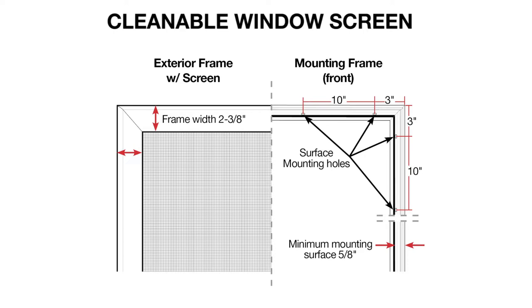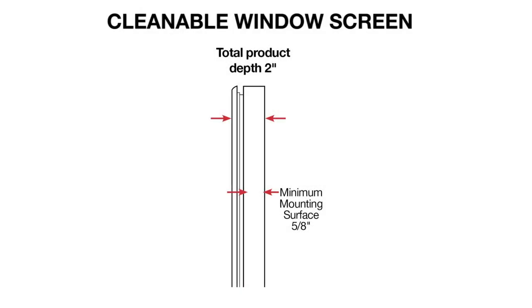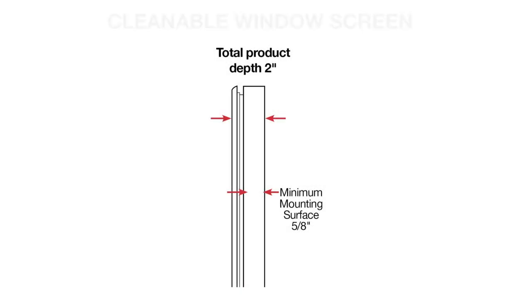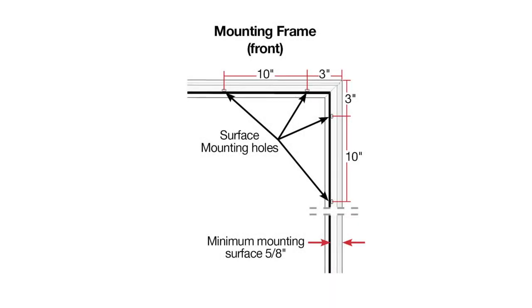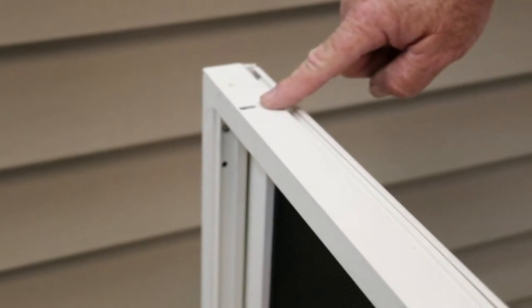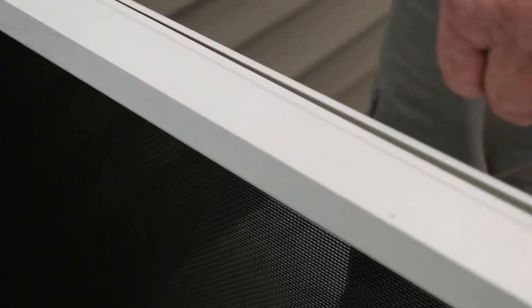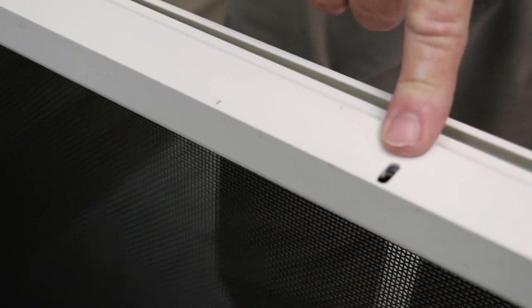The cleanable model frame width is 2-3/8 inches and the depth is 2 inches. The surface mount cleanable model configuration requires a 5/8 inch minimum mounting surface located along the outside 5/8 inch rear edge of the frame as shown. For a recess mount application, the 5/8 inch minimum mounting surface is along the back of the outside edge of the frame, also as shown.